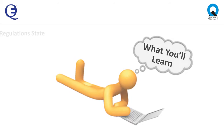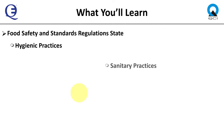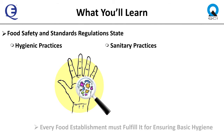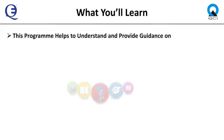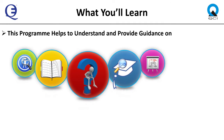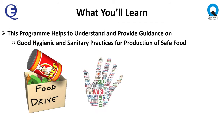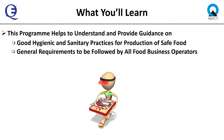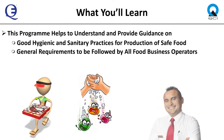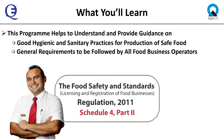Food safety and standards regulations state the hygienic and sanitary practices that every food establishment in the country must fulfill for ensuring basic hygiene. This program is designed to help you in understanding and provide guidance on good hygienic and sanitary practices for the production of safe food, covering the general requirements as laid out in the Food Safety and Standards Licensing and Registration of Food Businesses Regulation 2011, Schedule 4.